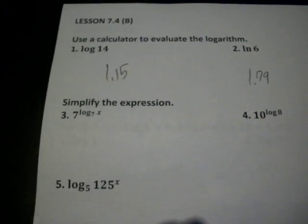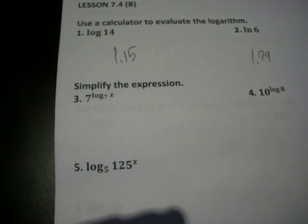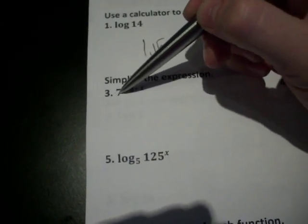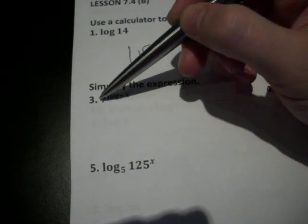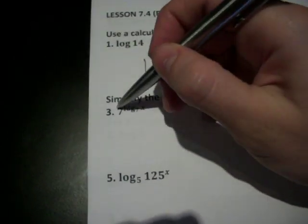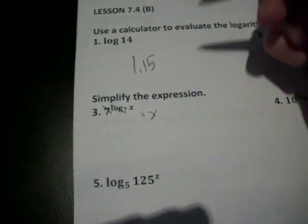That's all you got to do. Now, for these, no calculators involved. Simplify the expression. If this number right here and this number right here, so the bigger base and the smaller base, if those are the same, then you can basically cross them out and you're left with just the X.